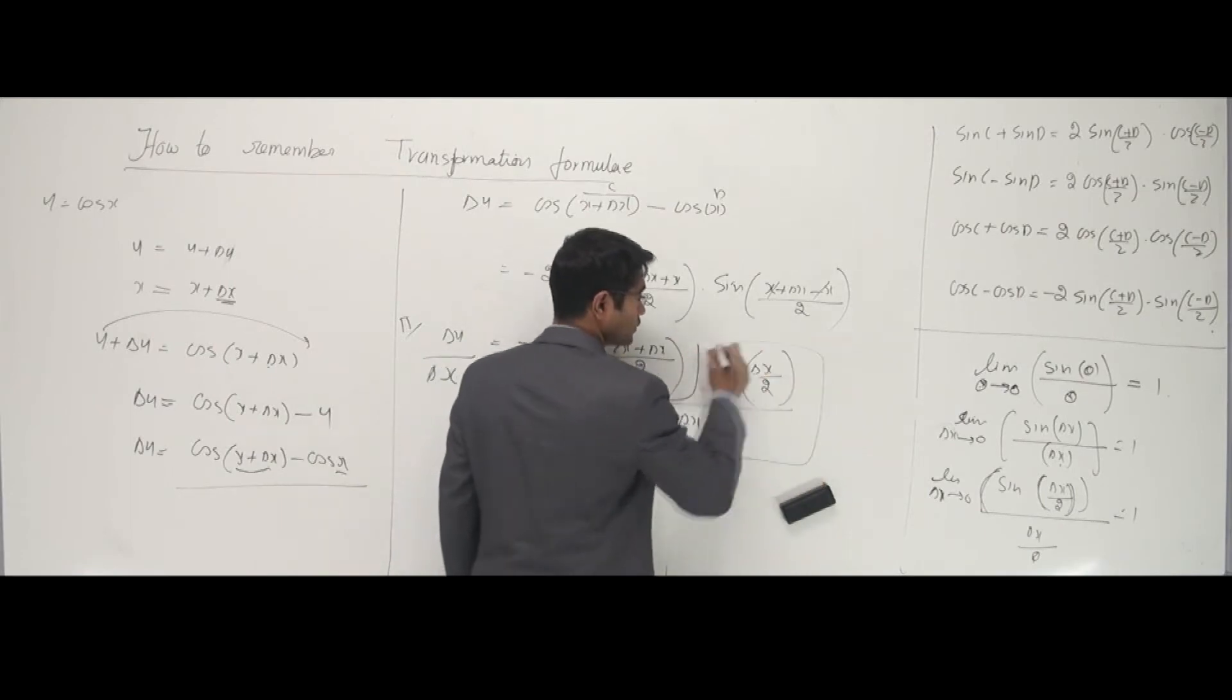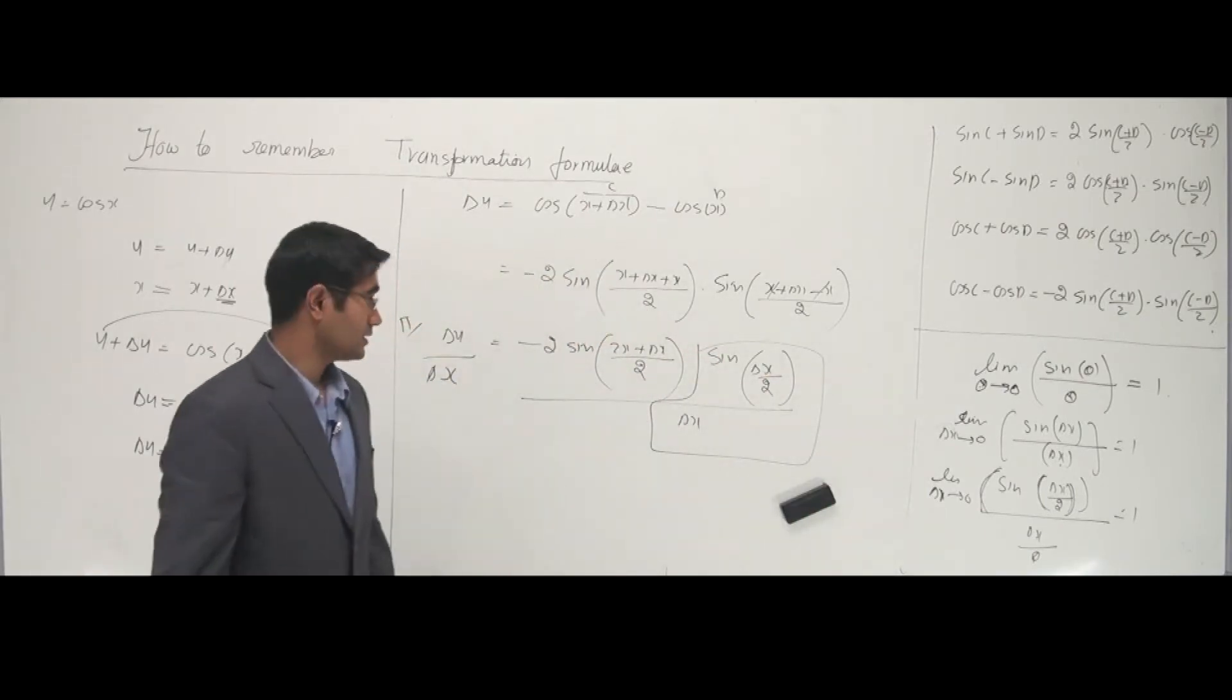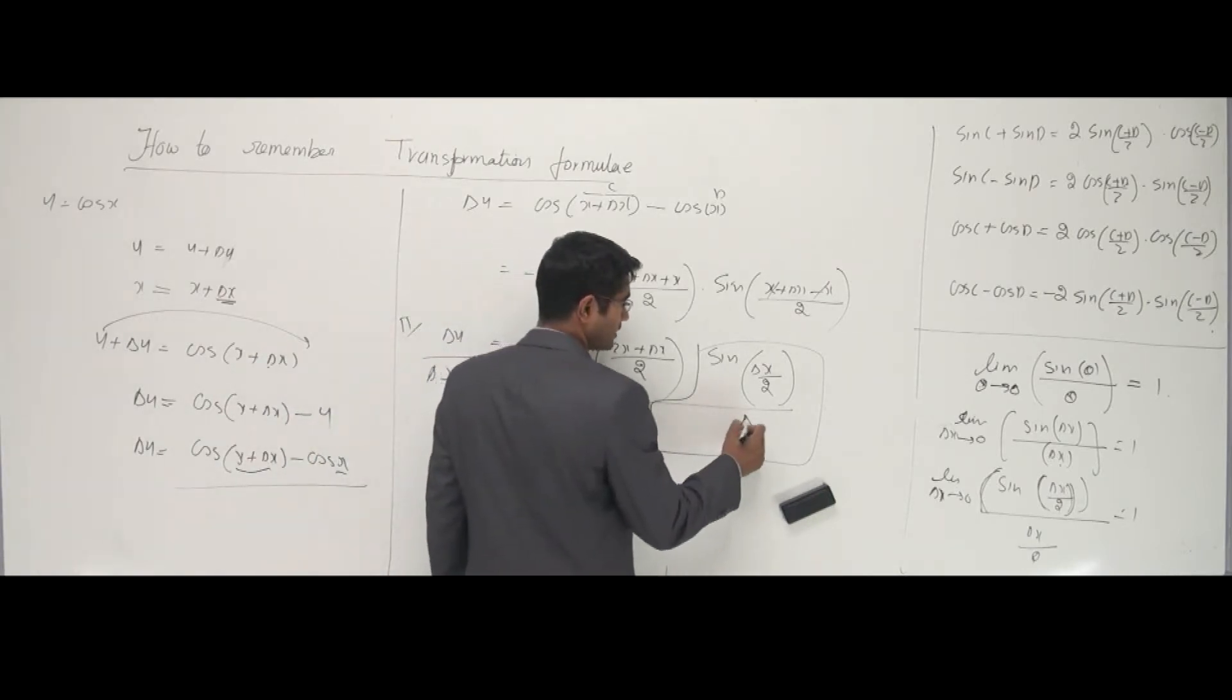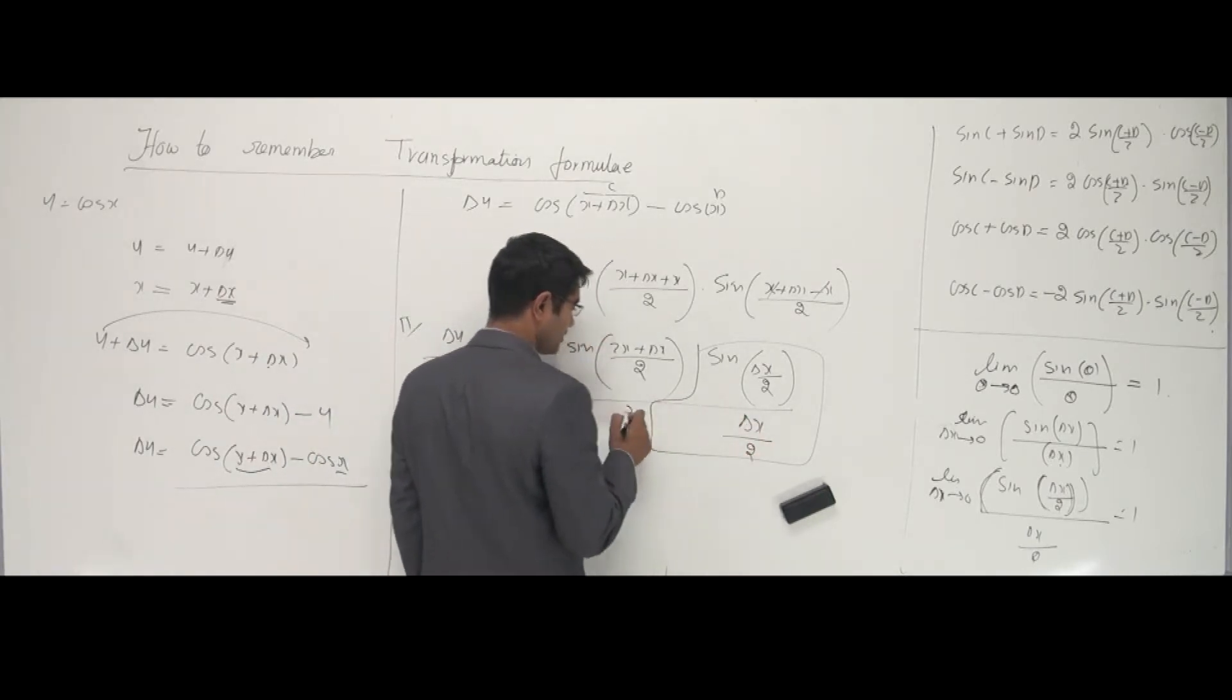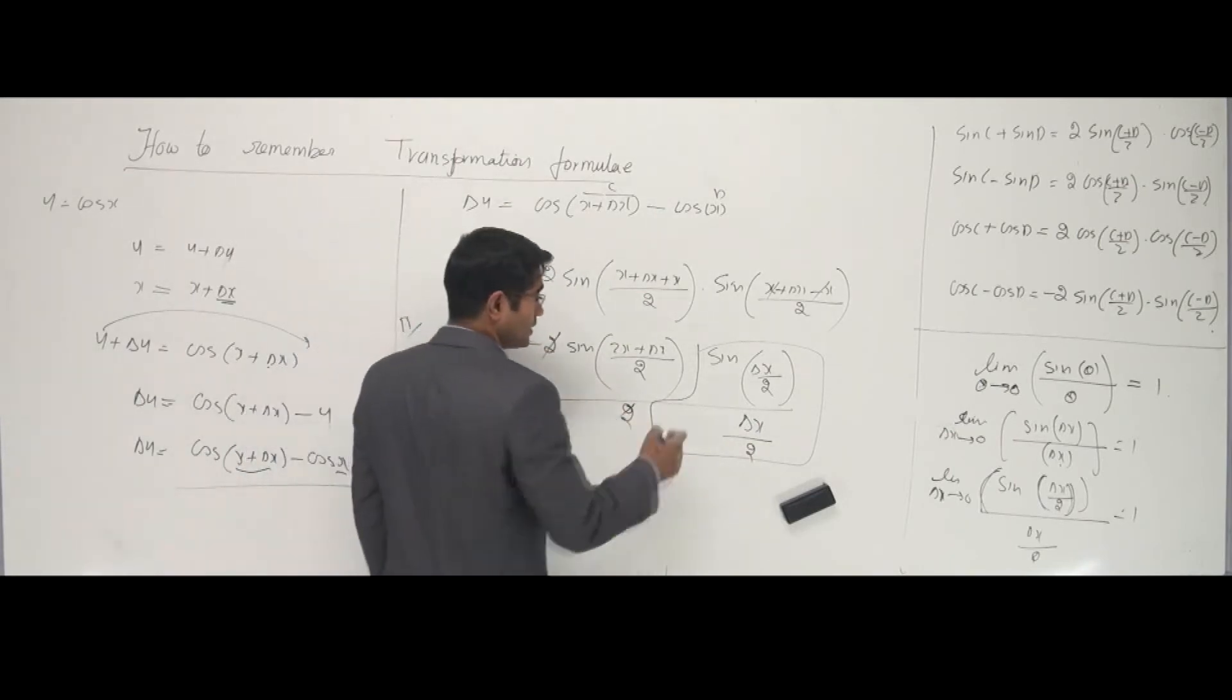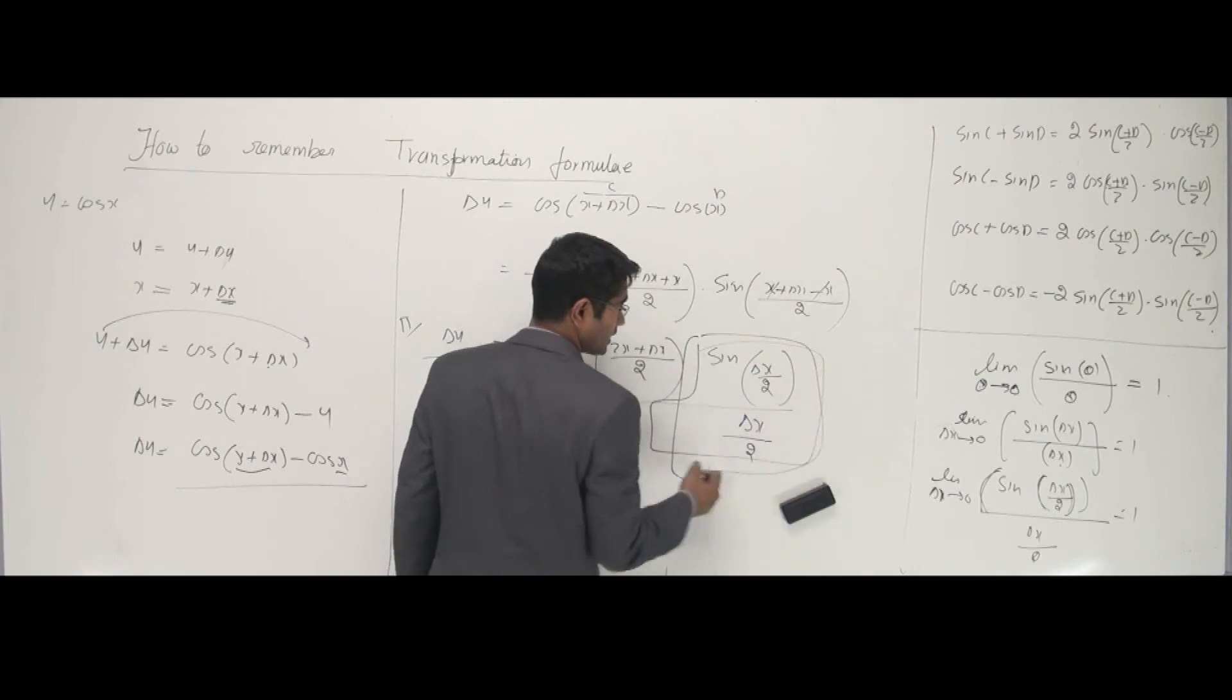Now I divide by delta x, and I can make this look right by writing delta x here, dividing by 2 and multiplying by 2. This won't make a difference, and I can cancel these 2s also.